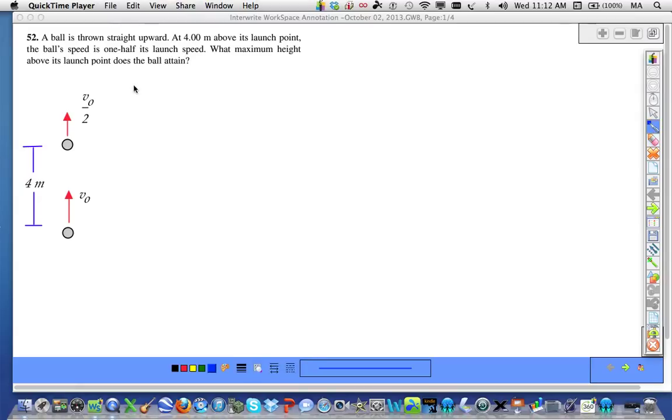Let's first list our knowns and unknowns. Since this is a free-fall problem, we're going to assume that g is negative 9.8 meters per second squared in the absence of air.